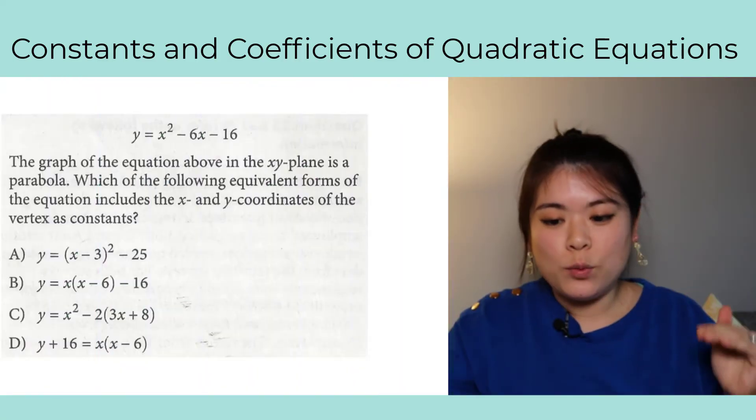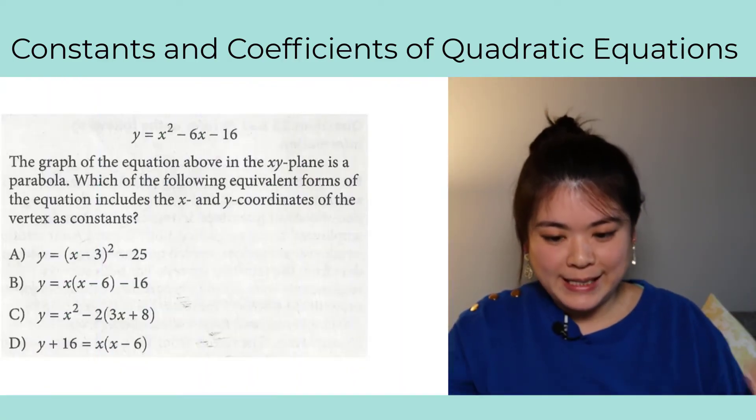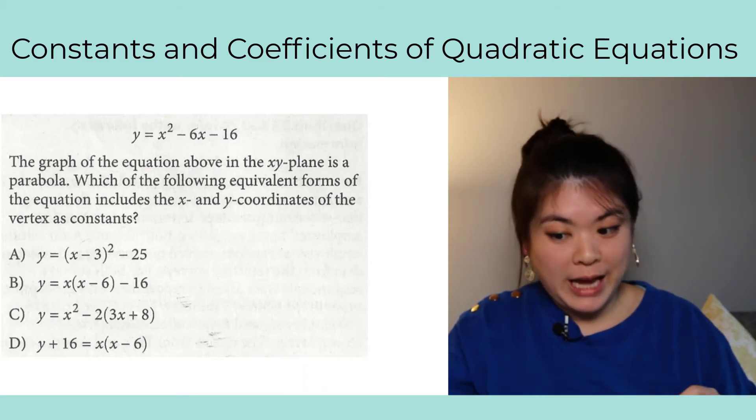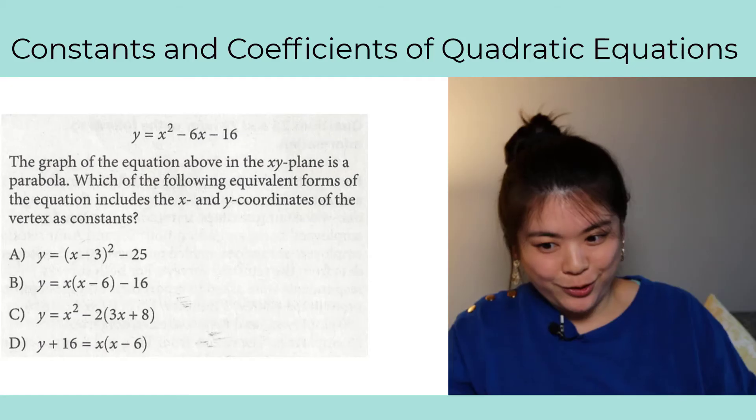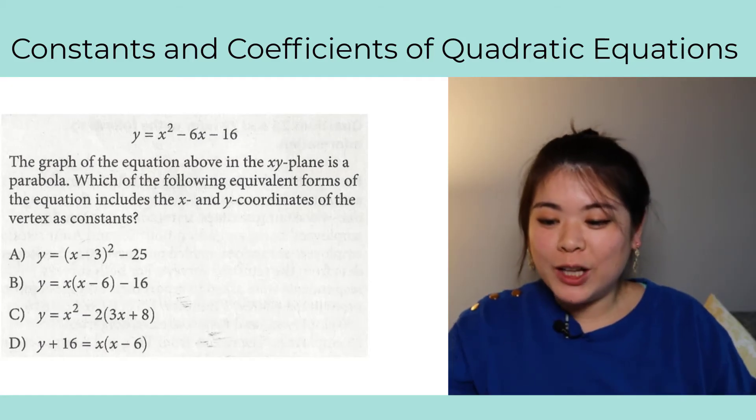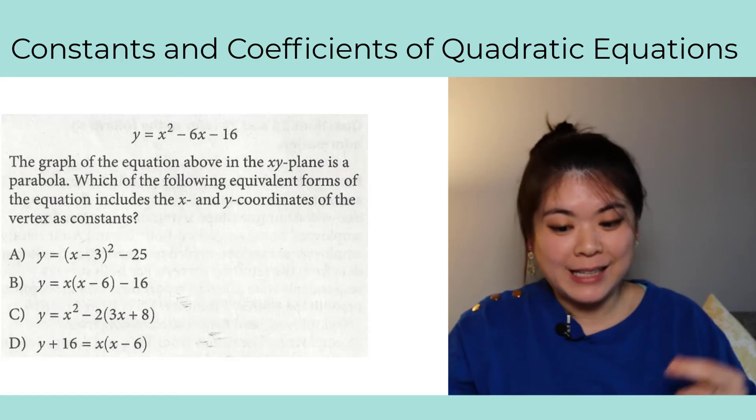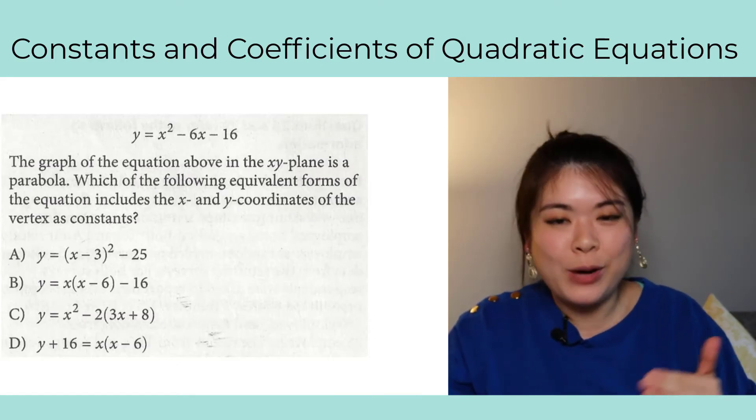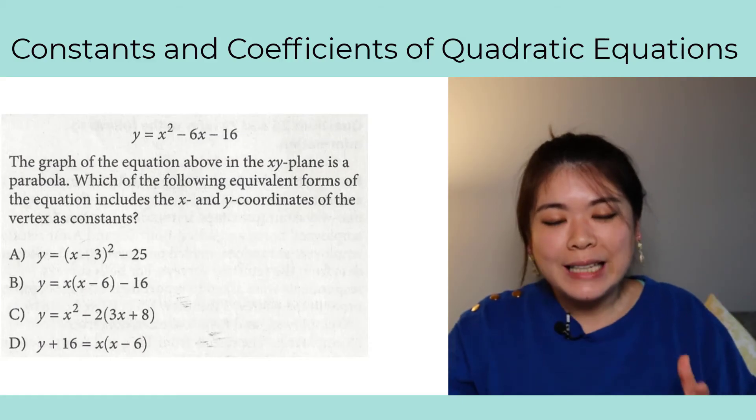To find that, we set y equal to zero. Well, you guys know from working with quadratics, in order to solve it equal to zero, you have to factor the quadratic. If we factor this one, we'll get x minus two and x minus four, which is the answer in D. All right, so there you go. Let's try another one. This equation is y equals x squared minus 6x minus 16.